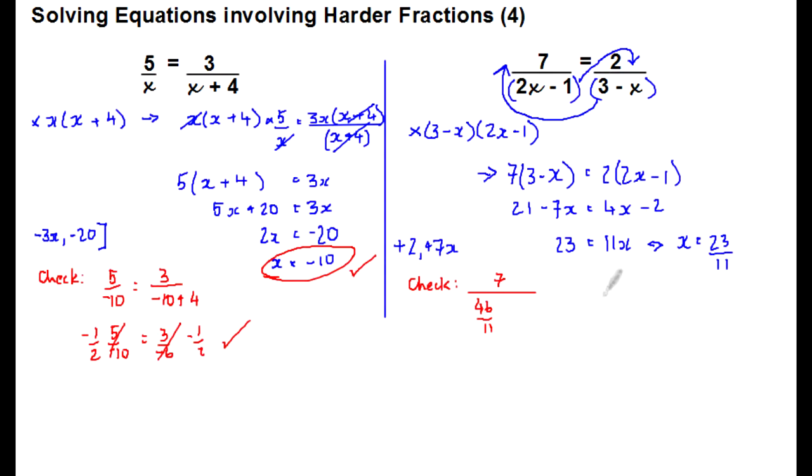We've got 7 into... Well, 2 lots of x is 46 over 11, and minus 1 is minus 11 over 11. And on the right-hand side, it's 2 over 3 lots of 23. Sorry, 3 is 33 over 11. And we've got take away an x and x is 23 over 11. So we're going to take away 23 over 11. So all the 11s on the bottom will cancel.